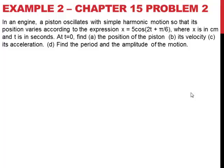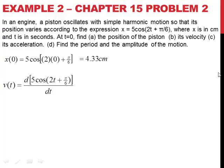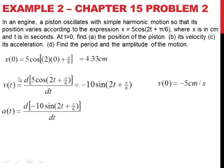Part a is quite easy — we just plug t equals 0 into our position function and get 4.33 centimeters. For part b, we take the derivative of our position function to get velocity: negative 10 sine(2t + π/6). Plugging in t equals 0 gives negative 5 centimeters per second. Part c asks for acceleration, so we take the derivative of velocity, giving negative 20 cosine(2t + π/6). Plugging in t equals 0, the acceleration is negative 17.32 centimeters per second squared.